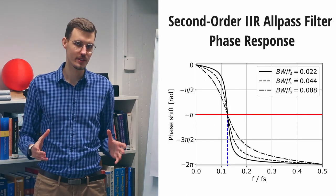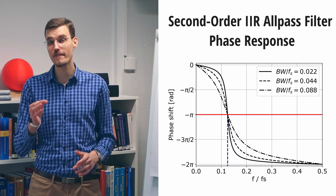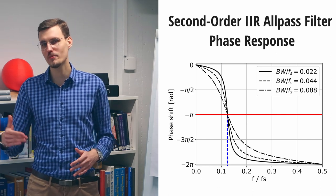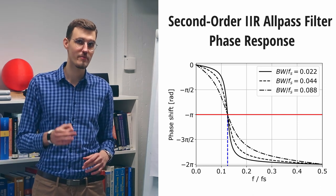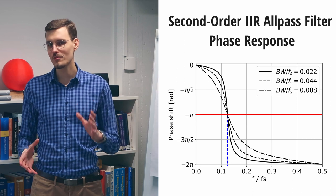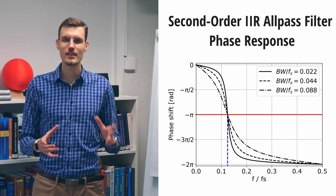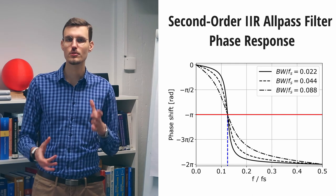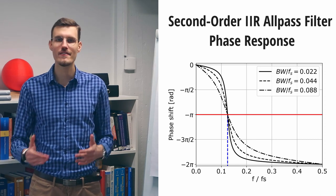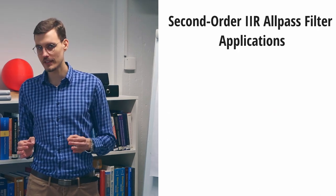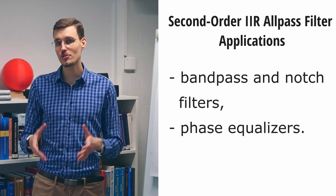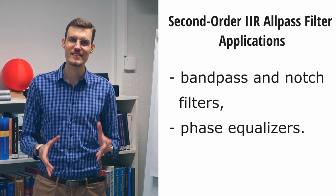Now, if we change the bandwidth parameter while keeping the break frequency fixed, we can control how fast the phase response curve tends to minus two pi. For very small value of the bandwidth parameter, we can obtain even a very steep slope. Now you should be able to see why the second-order ALLPASS filter is such a powerful structure, because we can separately control the bandwidth, so the steepness of the phase response curve, and the break frequency. This flexibility allows us to implement musically useful bandpass and notch filters, and precise phase equalization.